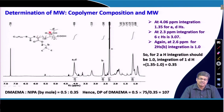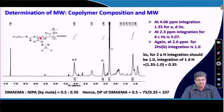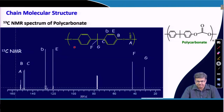This example is for a block copolymer, but we can use the same technique to find out composition in random copolymers or other types of copolymers, provided we have exclusive peaks for each different monomer.